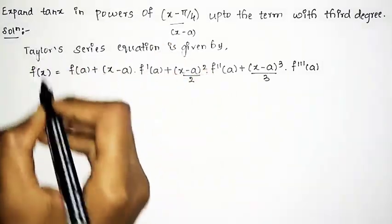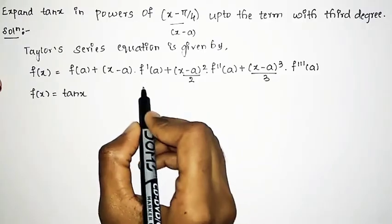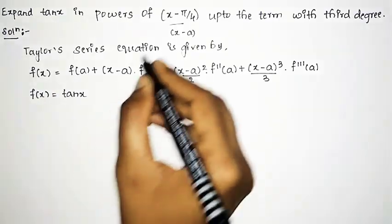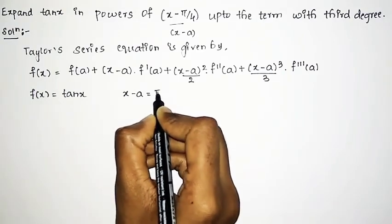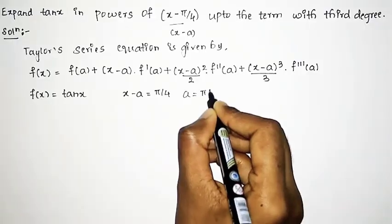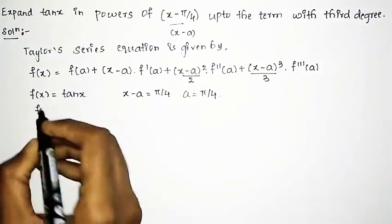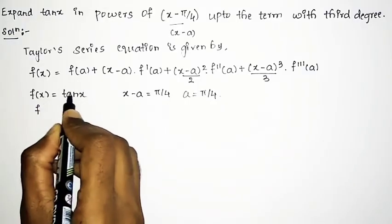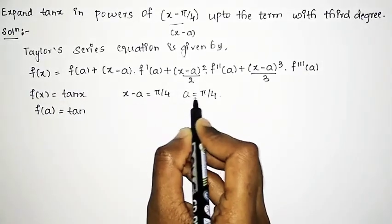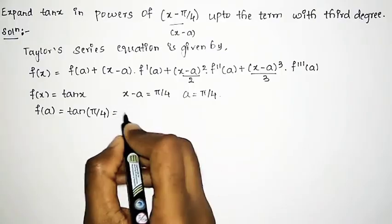We know the given f(x) is tan x. By clearly observing, (x minus a) corresponds to (x minus π/4), so a is nothing but π/4. Therefore f(a) = tan(π/4) = tan(45°) = 1. So the value of f(a) is 1.